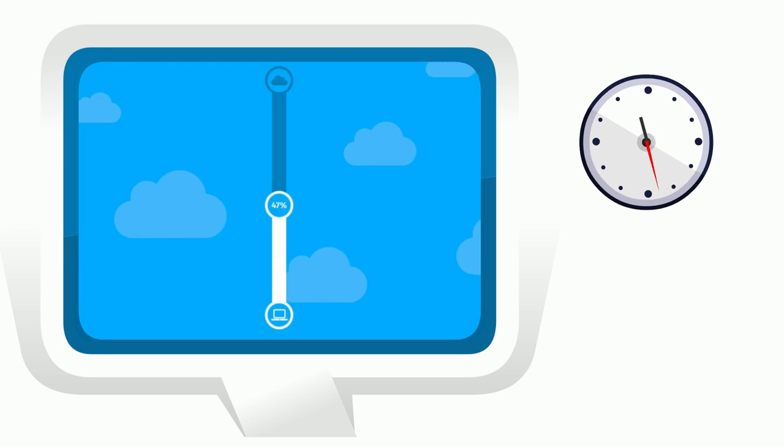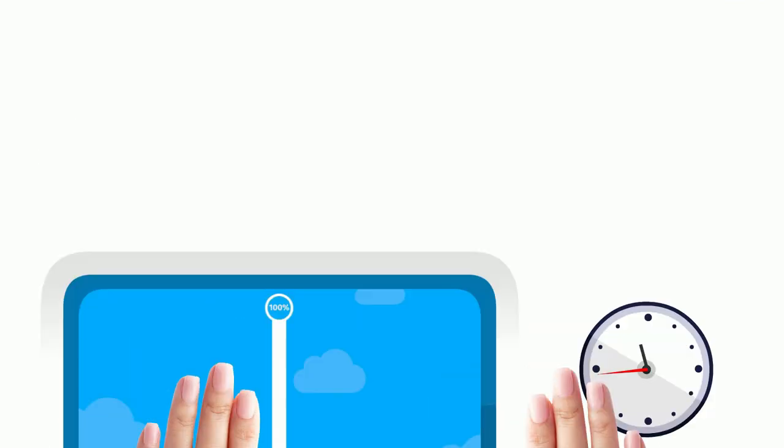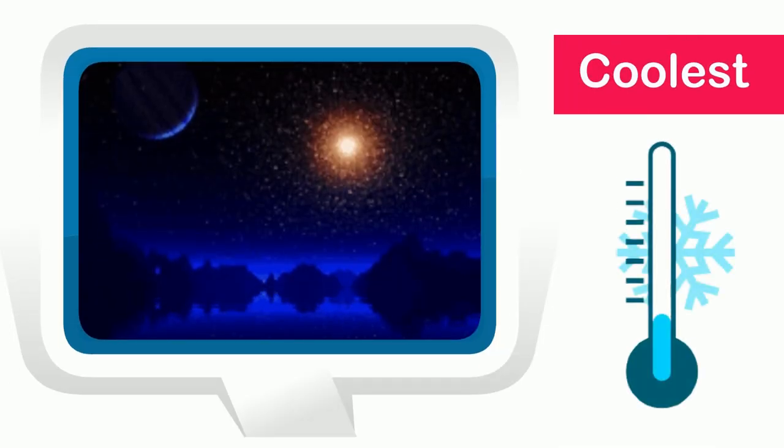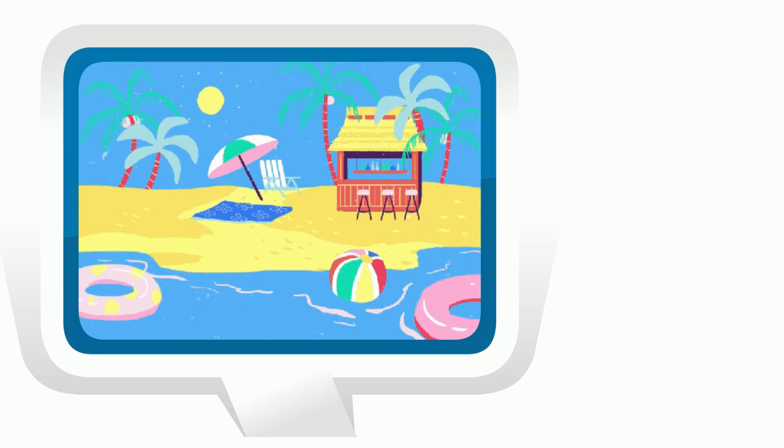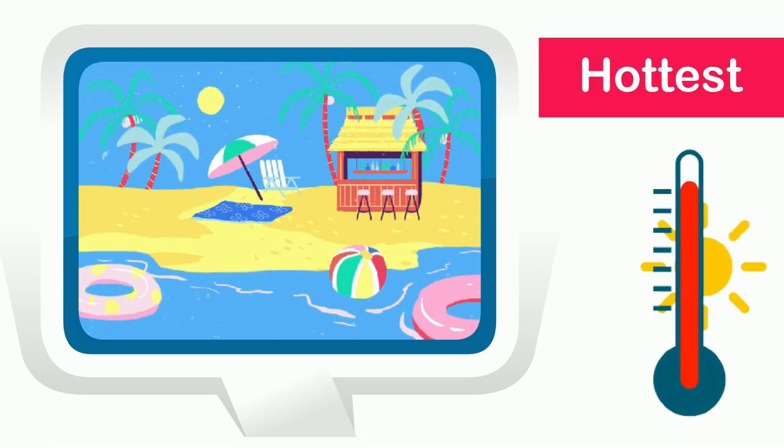The temperature changes with each passing hour. Usually, on any day, the coolest temperature is night time, especially the time before dawn and the hottest temperature is in the afternoon.